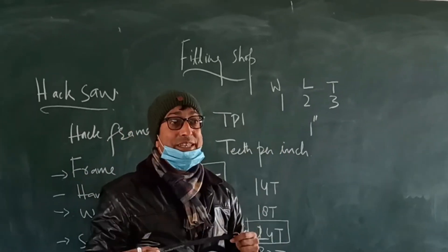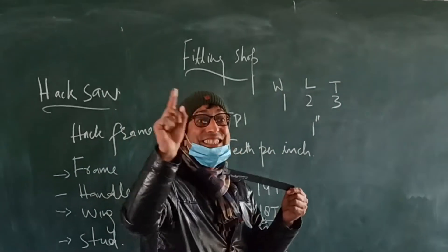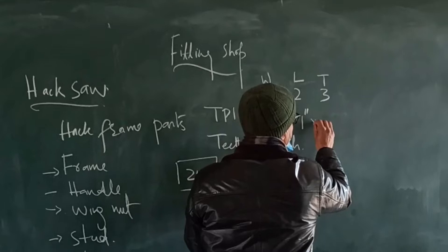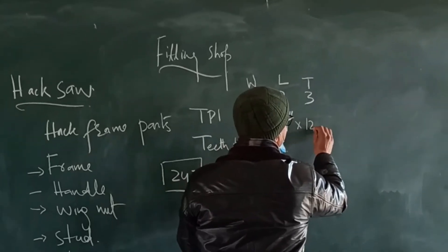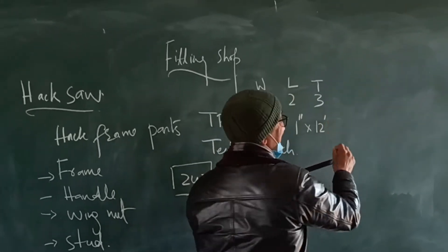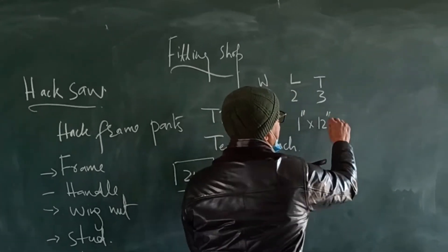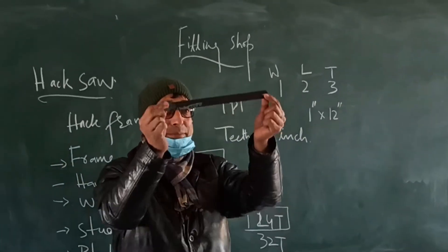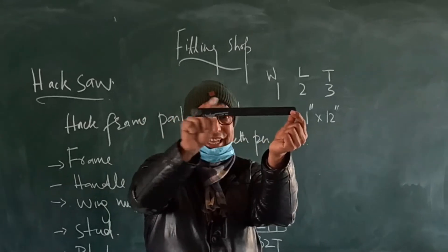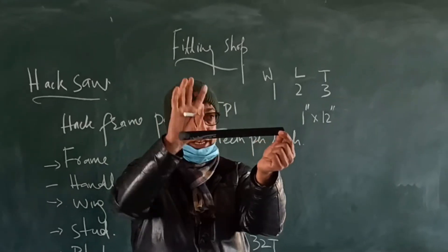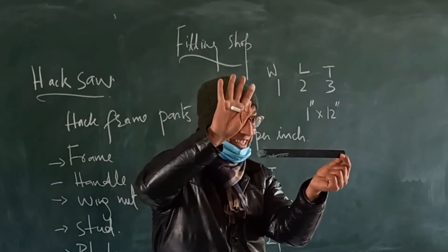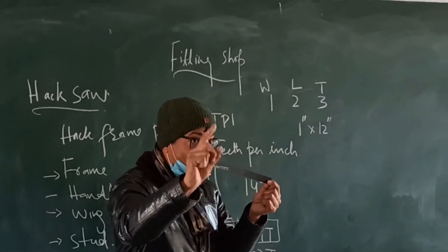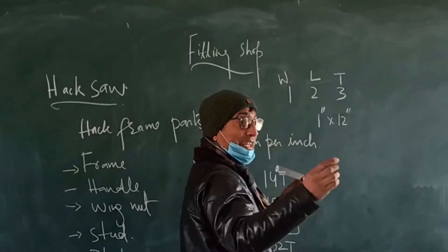The second dimension is length — this blade's length is 12 inches. And the third dimension is thickness.